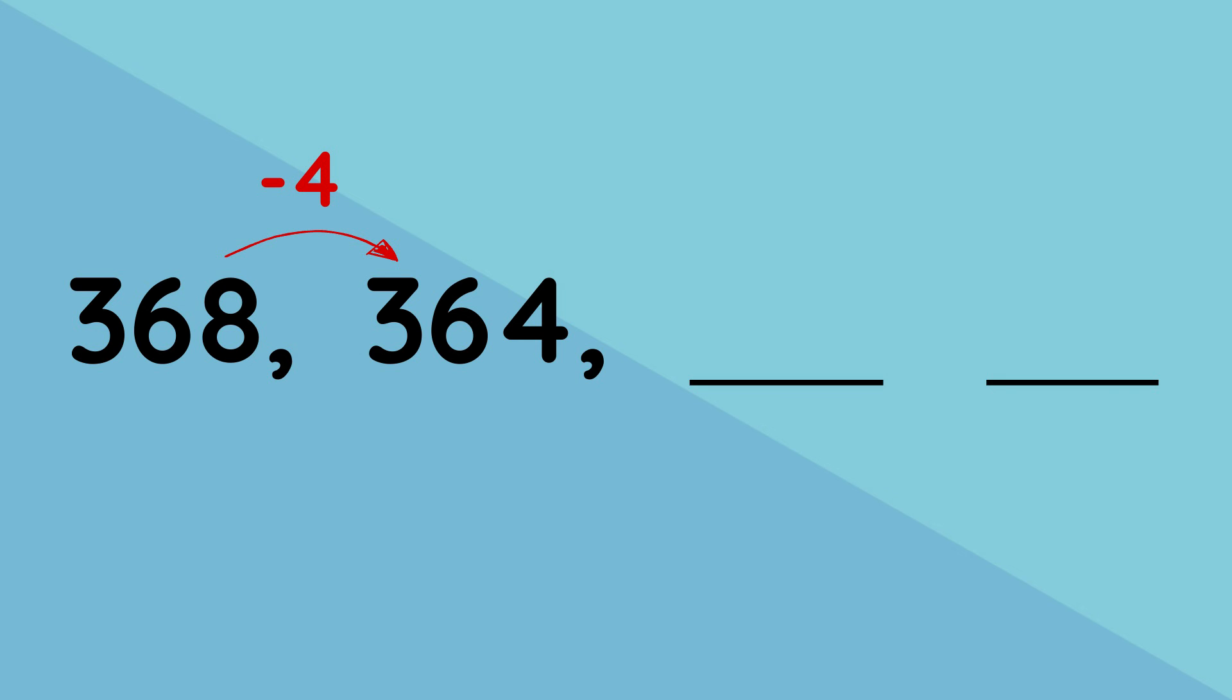So 364 subtract 4 gives us 360. And then our last missing number will be 360 subtract 4, which is 356. So our completed number pattern is 368, 364, 360, and then 356.